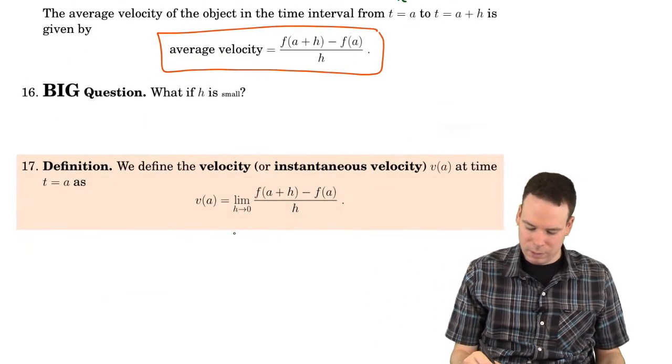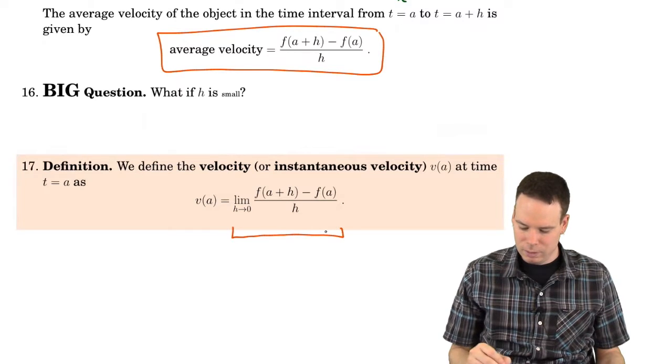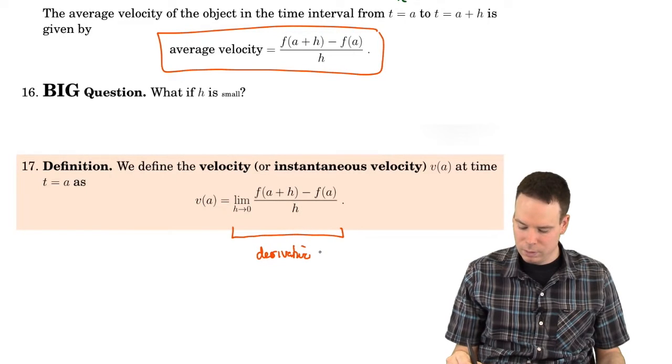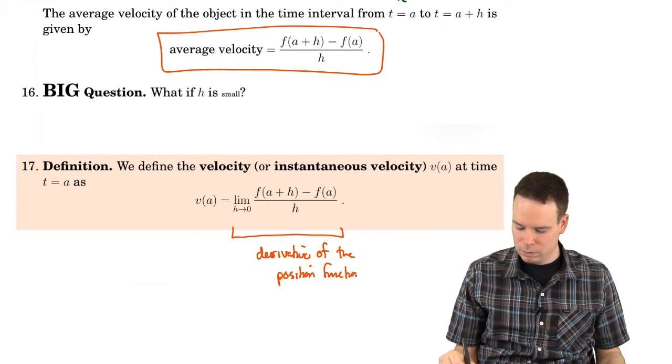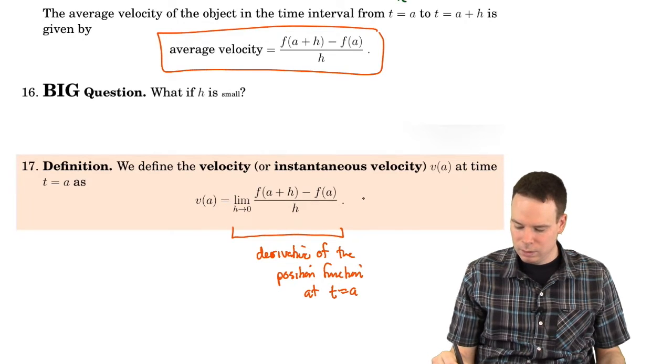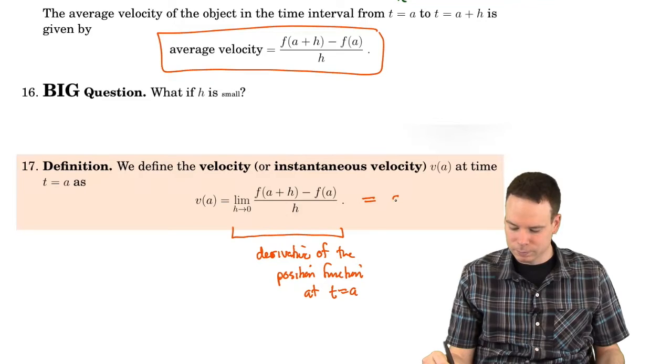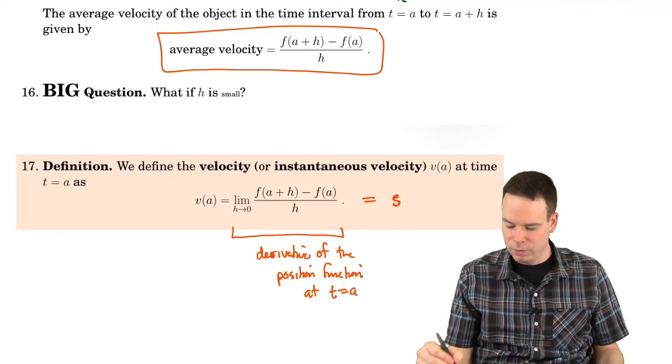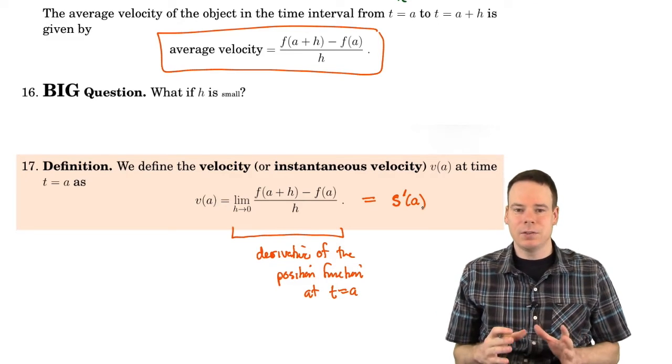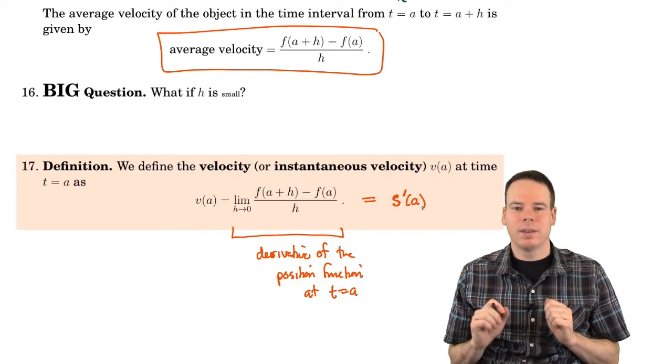So here's the key. This is the derivative of the position function at t equals a. And we have that notation that says, if we call the position function s or f as we've done above, it's going to be s prime of a. So the instantaneous velocity is a derivative. That's the key here.